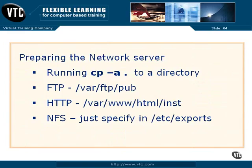If you're preparing an FTP server, a logical location for Red Hat Enterprise Linux is /var/ftp/pub. For an HTTP Apache server, a logical location is the directory noted there. If you're creating an NFS server — and that's one reason why I specify that in more detail — all you need to do is specify that directory in the /etc/exports configuration file.